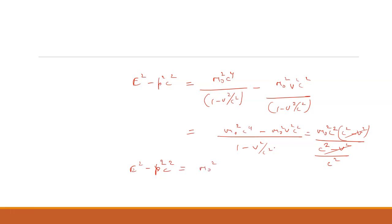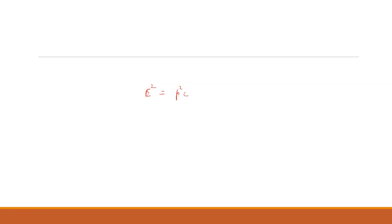After cancellation, E squared minus p squared c squared equals m₀ squared c⁴. Therefore E squared equals p squared c squared plus m₀ squared c⁴, or equivalently E equals the square root of p squared c squared plus m₀ squared c⁴.